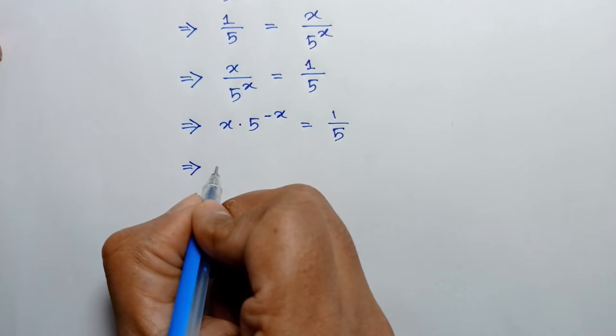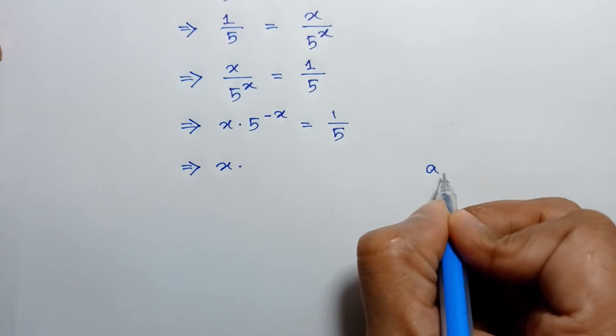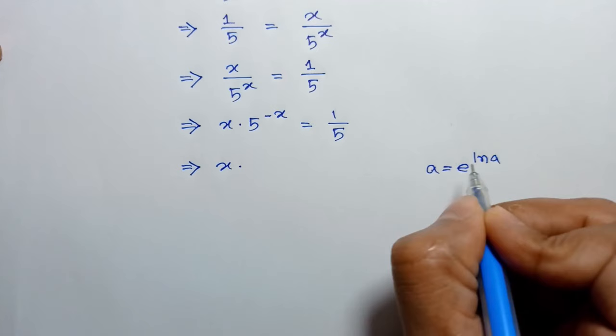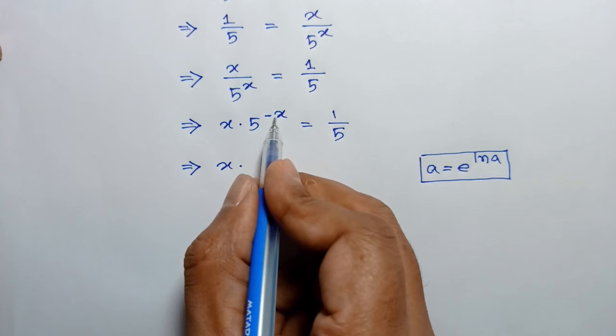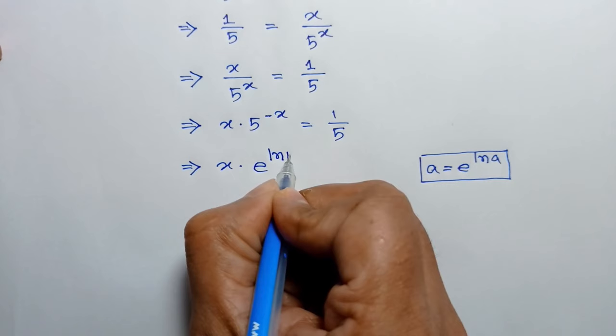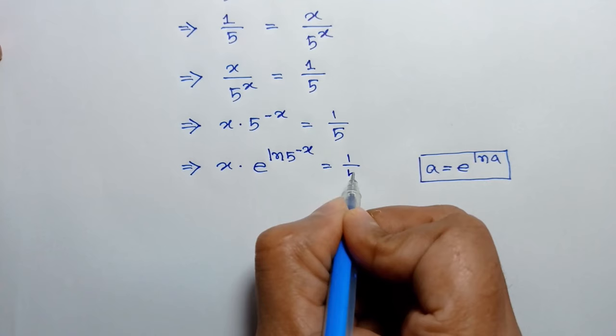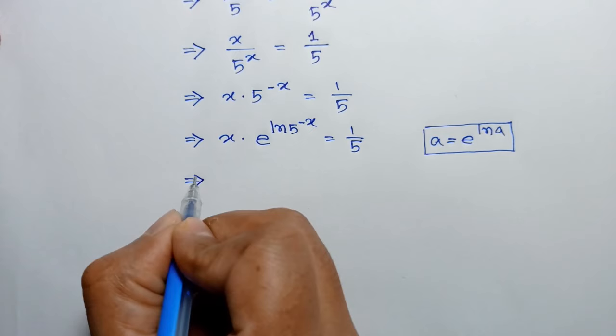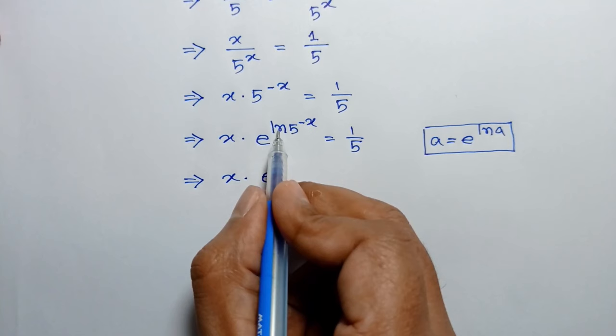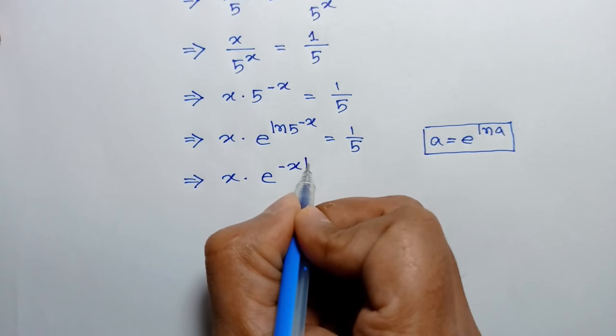Now, x times — according to the law that a is equal to e to the power ln of a — we can write 5 to the power negative x as e to the power negative x ln of 5. So the equation becomes x times e to the power negative x ln of 5 is equal to 1 over 5.